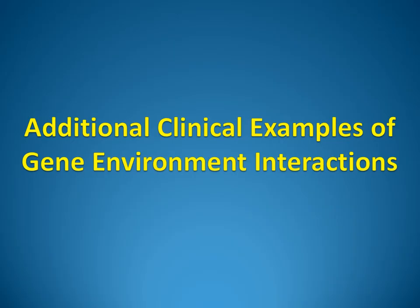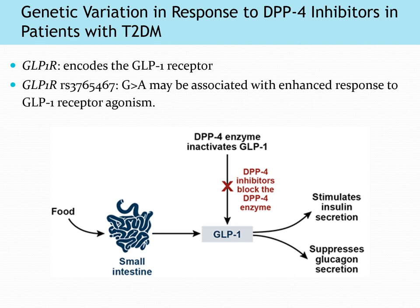Now we're going to go more in depth into a few clinical examples of gene-environment interactions described in literature. We have three examples — for each, I'll go through background information, a brief study summary, and an outline of the possible GXE. Our first example involves the hormone GLP-1. GLP-1 is secreted in response to food entering the small intestine and agonizes GLP-1 receptors to stimulate insulin secretion. GLP-1 is inactivated by the enzyme DPP-4, so in patients with diabetes we use DPP-4 inhibitors such as sitagliptin and linagliptin to prevent degradation of GLP-1 and increase GLP-1-mediated insulin secretion.